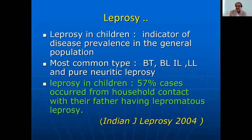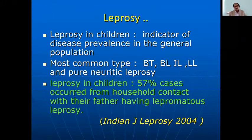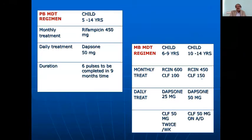Leprosy in children is an indicator of disease prevalence in the general population. About 57% of cases occur from household contact, often with the father having leprosy. If you find a child with leprosy, it is your duty to have the whole family examined. Standard WHO treatment regimen is available at any leprosy center.